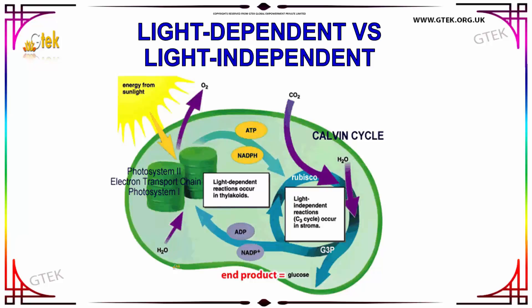The thylakoid absorbs sunlight to produce oxygen, as you can see here. The end product of the Calvin cycle is glucose.